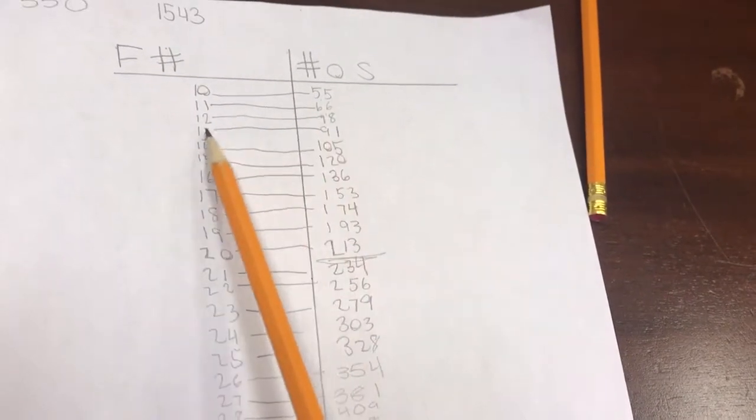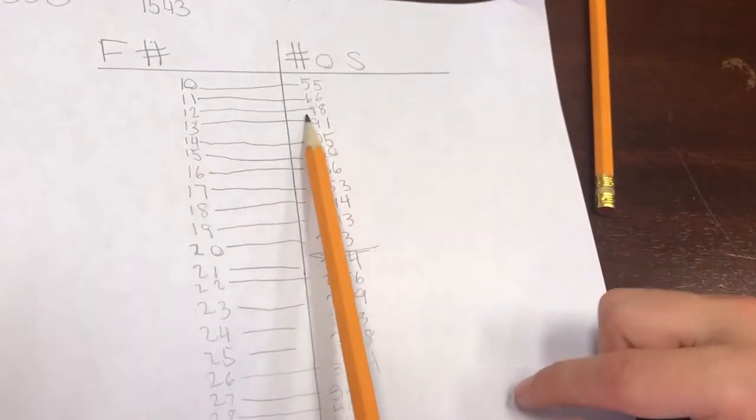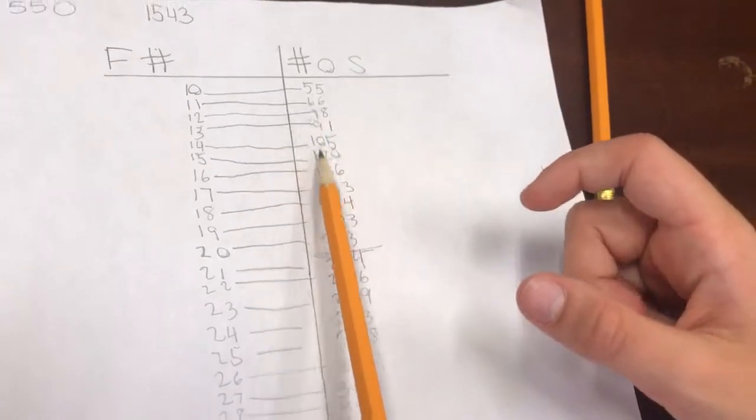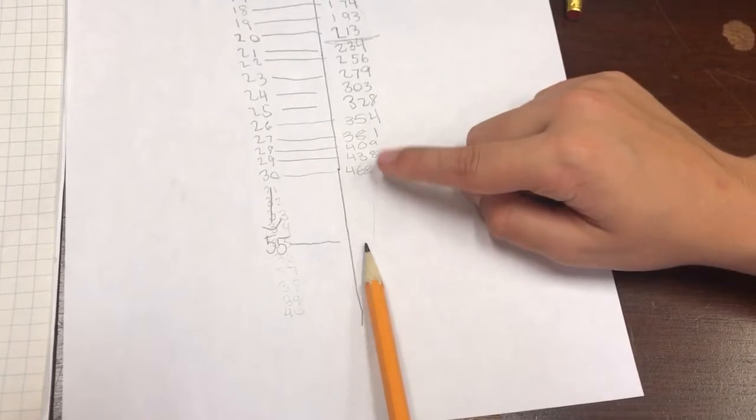Yeah, and then you just repeatedly added - so you added 12 to 66 to get 78, and then you completed that all the way down to 50. Okay.